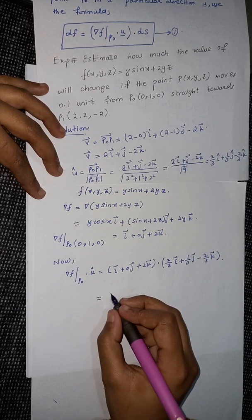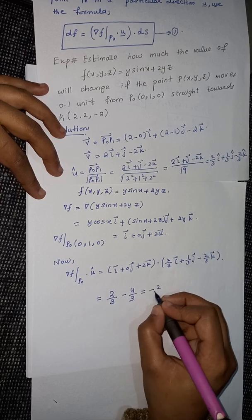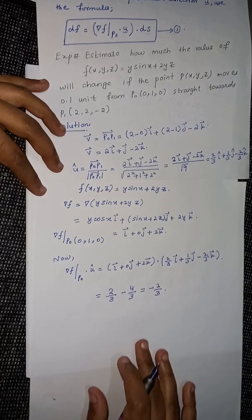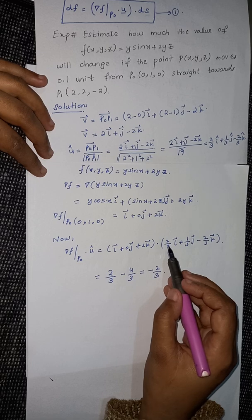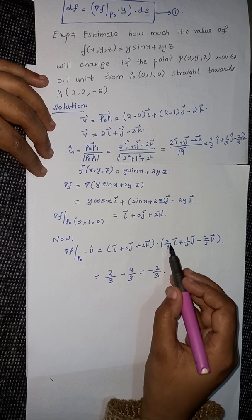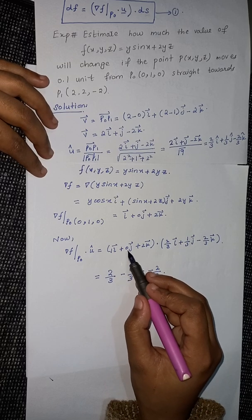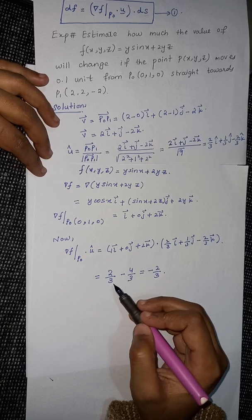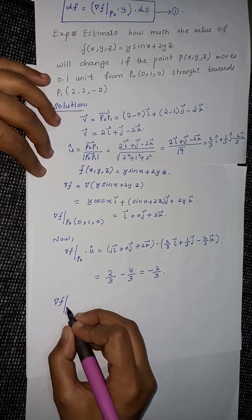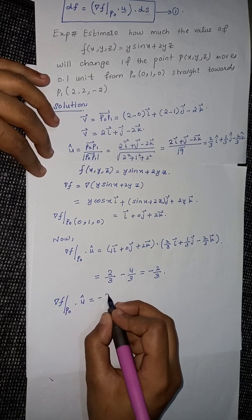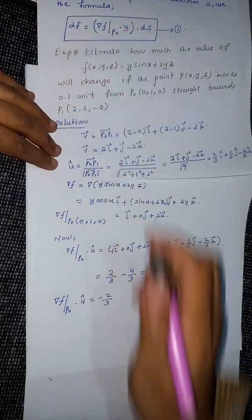Taking the dot product: i component gives 1 × (2/3) = 2/3; the j component gives 0 × (1/3) = 0; and the k component gives 2 × (−2/3) = −4/3. Adding these together: 2/3 − 4/3 = −2/3. So the gradient of f at p₀ dotted with û equals −2/3.